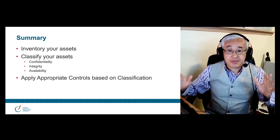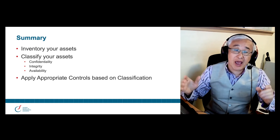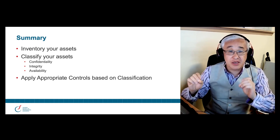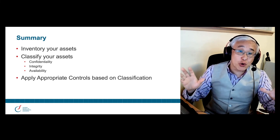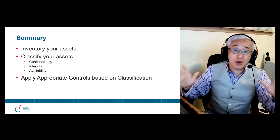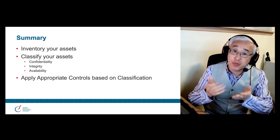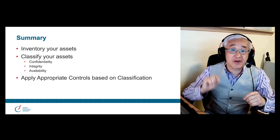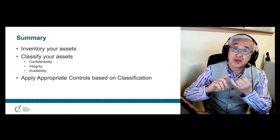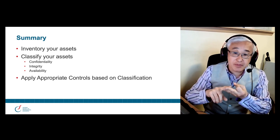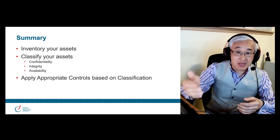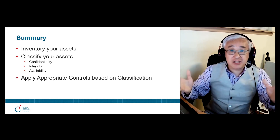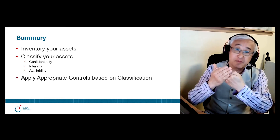To recap: in order to embed information security into data governance, you need to do three things. First, inventory your informational assets — make sure you know all the informational assets within your domain. Second, classify your assets based on confidentiality, integrity, and availability. And once you do so, apply proper and appropriate security controls based on the classification of the data you have done. That is how you incorporate information security into data governance.